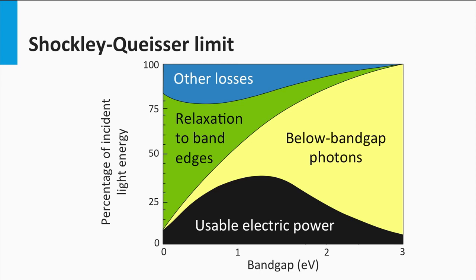We don't allow the solar cell to increase in temperature. This means that all energy in the incoming AM1.5 spectrum can escape the system of the solar cell by either the current density generated or by the radiative recombination of charge carriers. As a result, the maximum efficiency which can be achieved is around 33% in the band gap range from 1 eV up to 1.8 eV, as indicated by the black area in the shown graph.